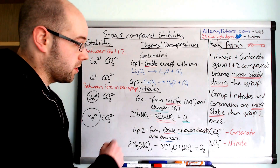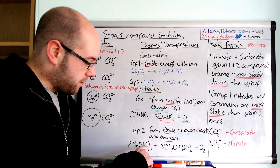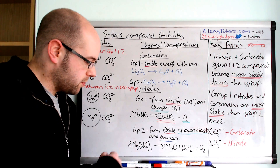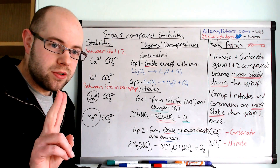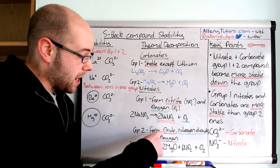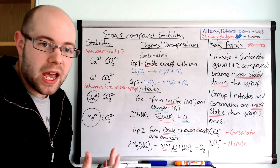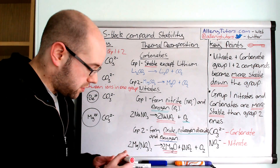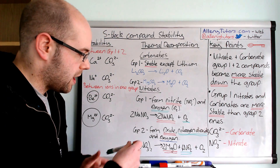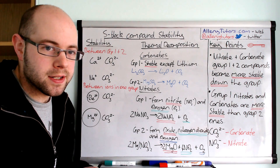Group 2 nitrates will decompose to form oxygen, nitrogen dioxide, and an oxide. For example, magnesium nitrate: magnesium has a 2+ charge and the nitrate is NO3-, so we need two NO3- to balance the Mg2+, which is why there's a 2 there. We form a metal oxide (highlighted in red) and nitrogen dioxide (highlighted in green) and oxygen. This can be applied to any other group 2 metal. Make sure the equation balances — it's really important because if it doesn't balance you lose a mark in the exam.